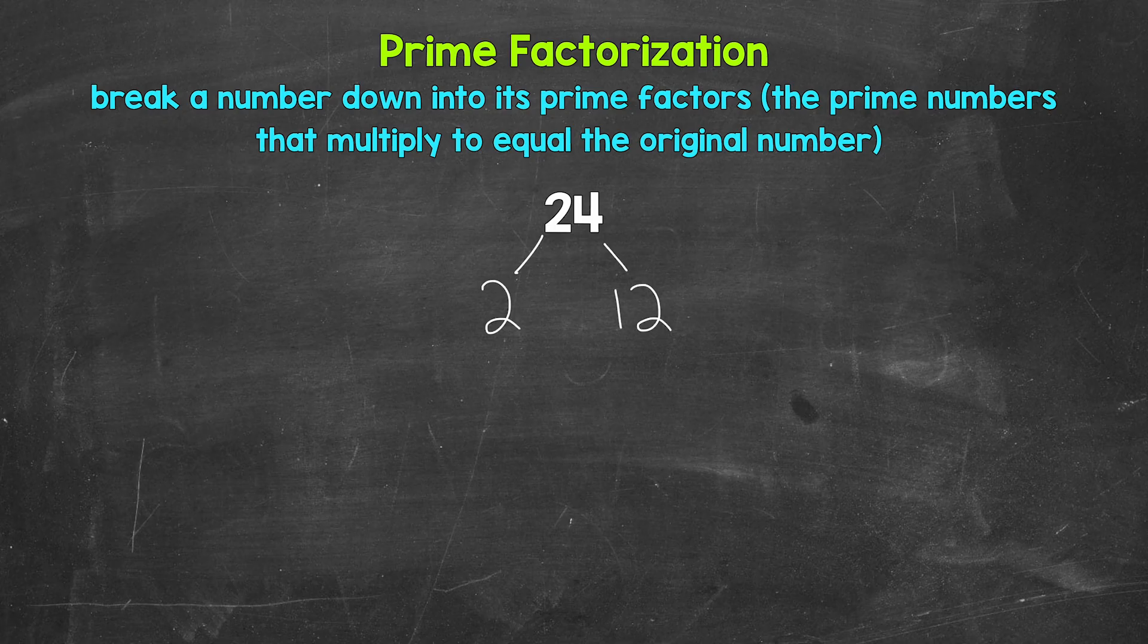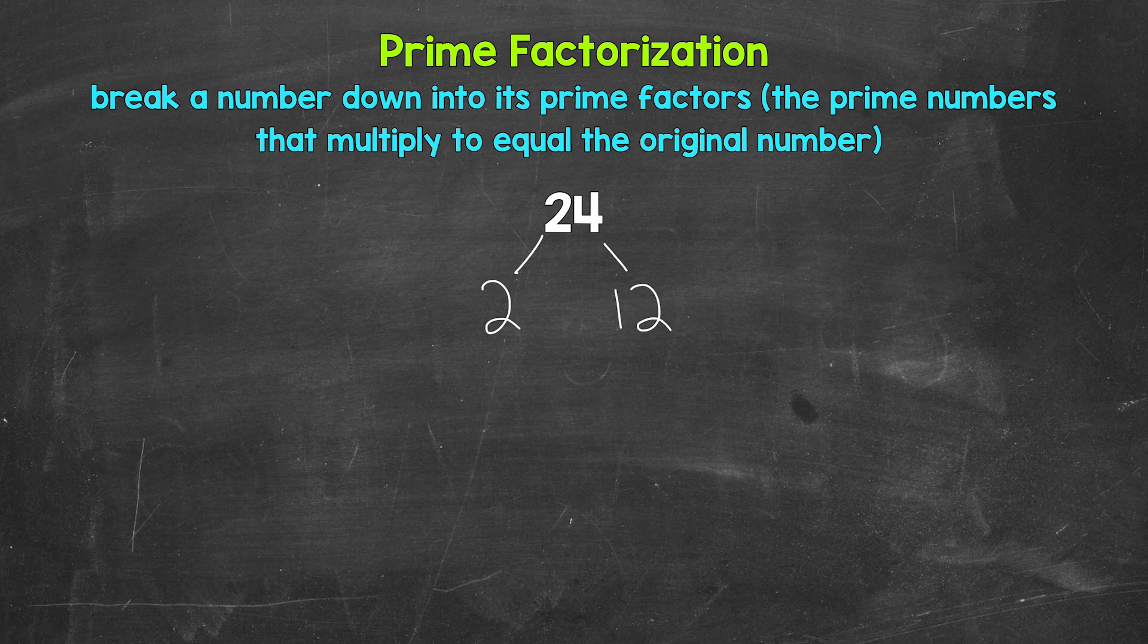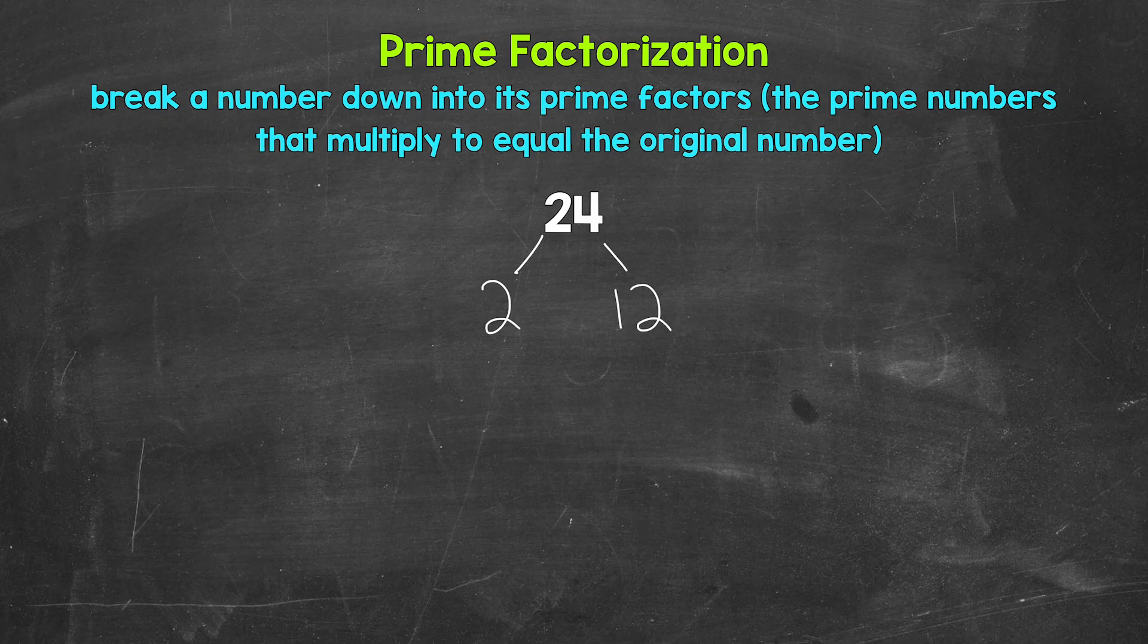Now you may be thinking three and eight are factors of 24, or six and four are factors of 24. Could we have started with those factors? Absolutely, those work too. Depending on the number, there may be different paths we can take, but in the end we will get the same prime numbers. And that's what's important. There can be multiple ways to do these.